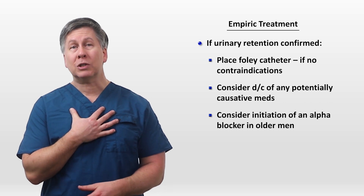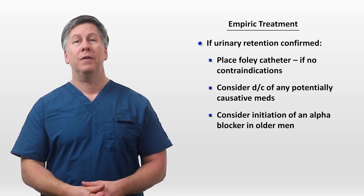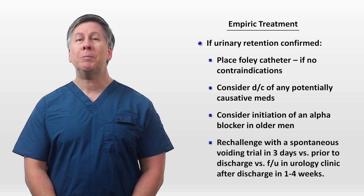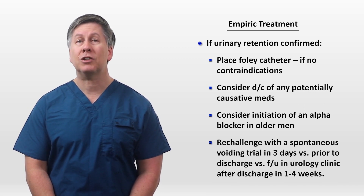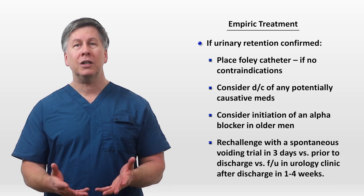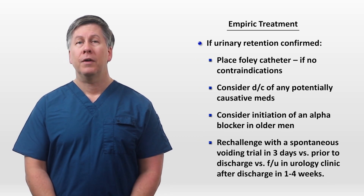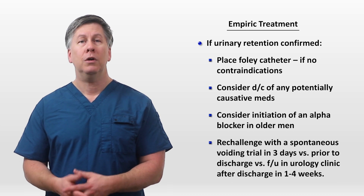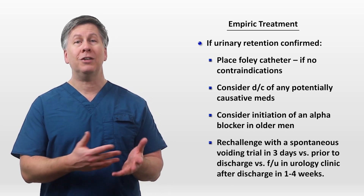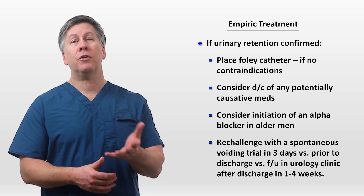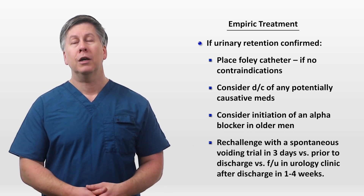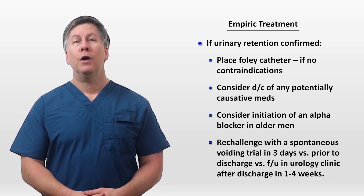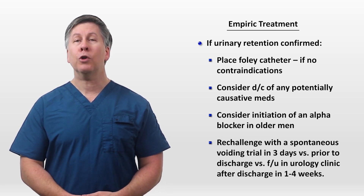While alpha blockers have been prescribed in women in this situation, it's relatively uncommon and I'm personally unconvinced it's a good idea. Regarding how long to keep the catheter in before a spontaneous voiding trial, there is no shortage of opinions but little published data. In practice, options range from a voiding trial after three days of bladder decompression, to within 24 hours prior to planned discharge, to discharging the patient with the catheter in place and referring them to urology clinic in one to four weeks. The most appropriate option depends on the situation and local practice.